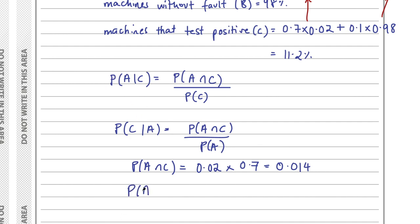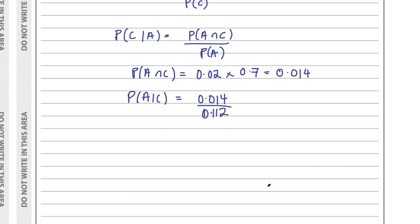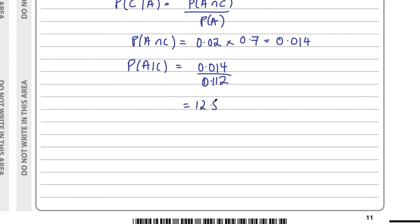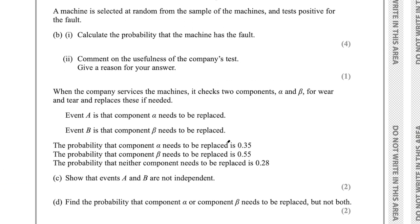The probability that a machine has a fault given it tests positive is 12.5%. That's actually pretty low — if you test something and it tests positive for a fault, you'd want to be confident it actually has that fault. 12.5% means you'd want that number to be higher. That leads into the next part.